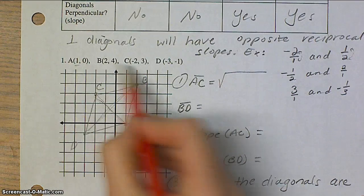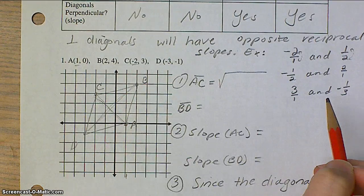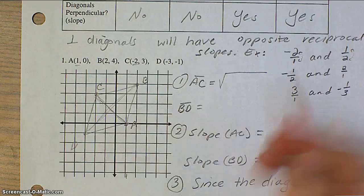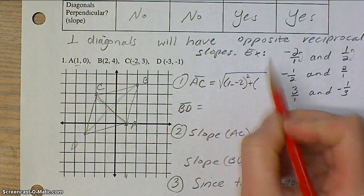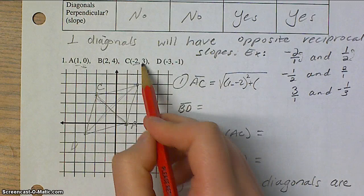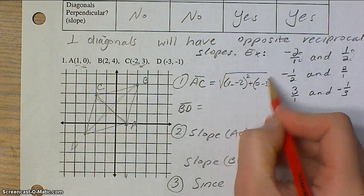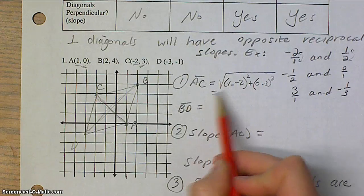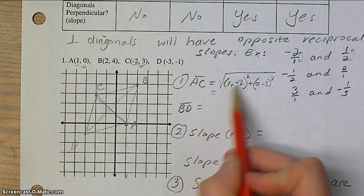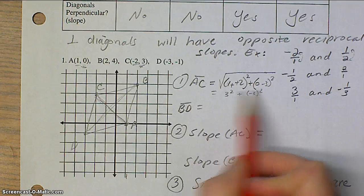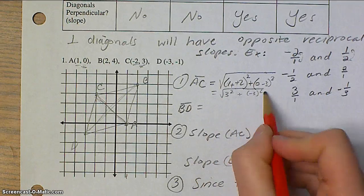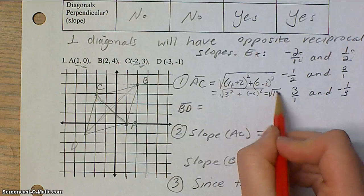Make sure you're using the coordinates A and C because that's a diagonal. 1 minus negative 2 squared, and then 0 minus 3 squared. That's going to give me positive 3 squared, negative 3 squared. Both of those are 9. 9 plus 9 gives me the square root of 18.